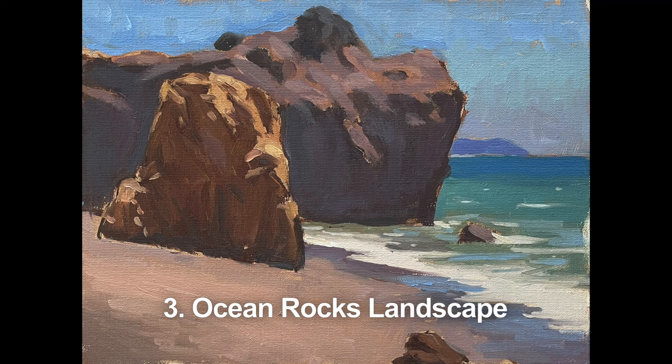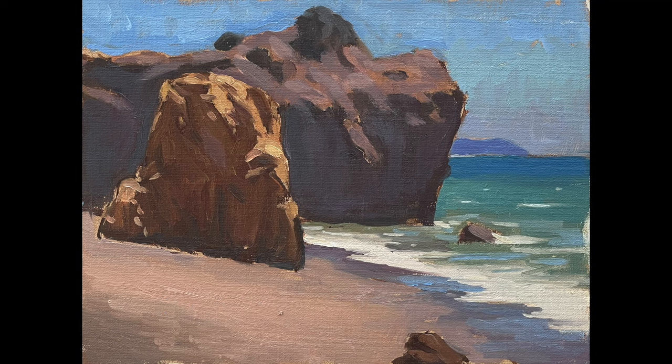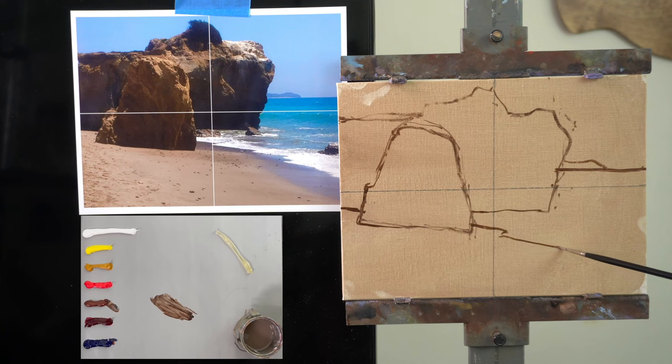The last tutorial in the beginner builder painting path is this ocean rocks landscape — it's from a photo I took at El Matador Beach in California. One of the first things you'll notice is that I have more colors on my palette, so you get to see how I utilize colors beyond the primaries.